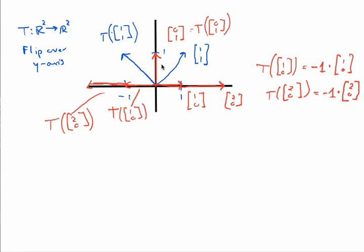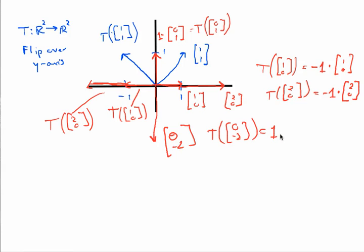Thinking about vectors on the y-axis, they are rescaled in place with a factor of 1. For example, the vector (0, -2) — its transformation, flipped along the y-axis, does absolutely nothing, so the transformation of (0, -2) is just 1 times (0, -2). Any vector on the y-axis is rescaled in its place because it won't move at all. Any vector on the x-axis is rescaled by a factor of negative 1. But anywhere else in R², the vector is really going to move and it's not just a rescaling operation.